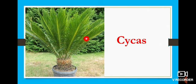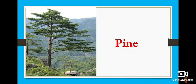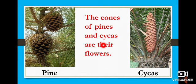And then Cycas. What plant is it? Cycas. C-Y-C-A-S. And then pine. What is it? Pine. And from the pine tree and from the Cycas, we get cones like this. Dry cones like this. We call these cones as their flowers. The cones of pines and Cycas are their flowers.